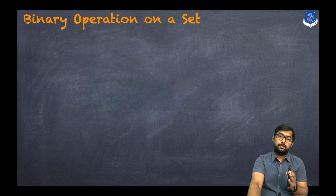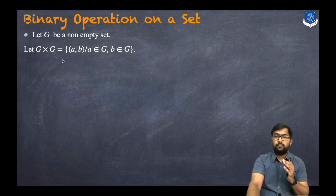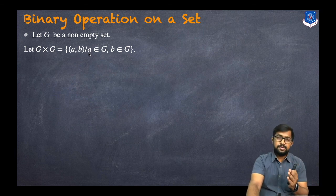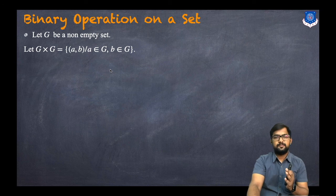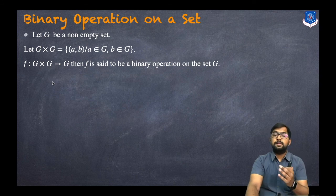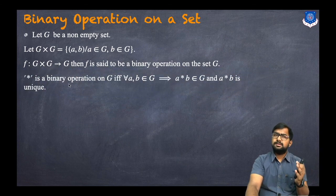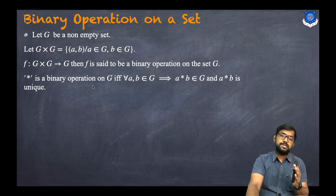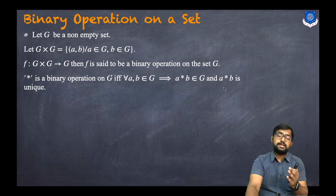A binary operation on a set: let capital G be a non-empty set, then G cross G — the Cartesian product of the set with itself — equals the set of all (a, b) such that a belongs to G and b belongs to G. If we take a function f from G cross G to G, then f is said to be a binary operation on G, denoted by star, if and only if for every a, b belonging to G, that implies a star b belongs to G.